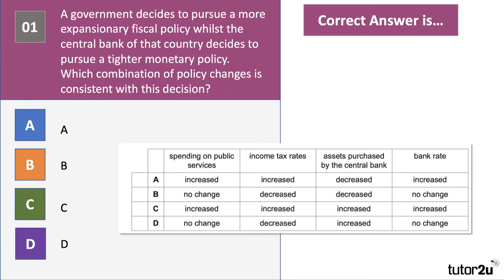Here's our first question. A government decides to pursue a more expansionary fiscal policy, whilst the central bank of that country decides to pursue a tighter monetary policy. Which combination of policy changes — A, B, C, or D — is consistent with this decision? Press the pause button, have a look at this question, and let's go through the answer when you're ready.